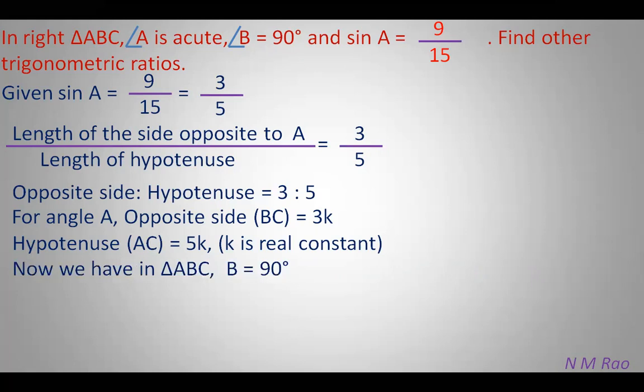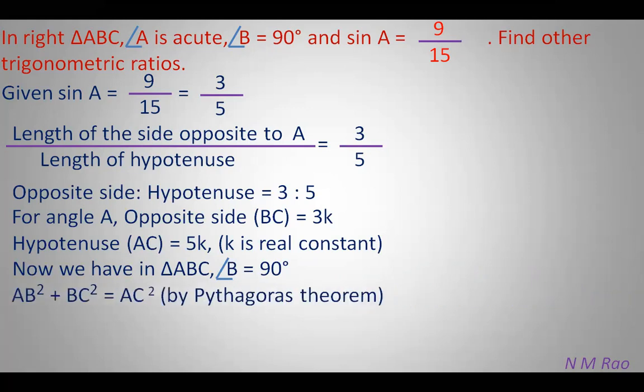In triangle ABC right angled at B, we can apply the Pythagoras formula: the hypotenuse square equals the sum of the squares of the other two sides.